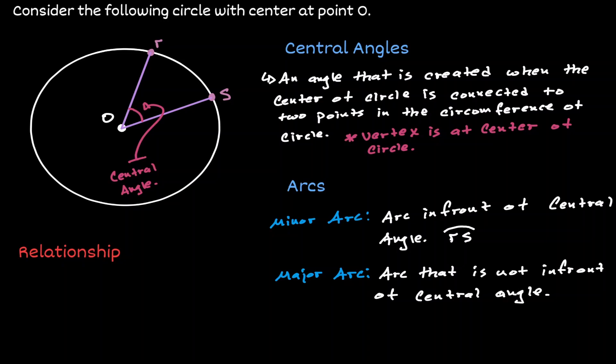So we cannot call this arc RS, because it can get confused with the minor arc. So let's introduce a new point. Let's call it T. So now we can refer to the major arc as arc RTS.